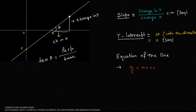We call the slope of any line m. The y-intercept is where the line intersects the y-axis at point p; op is the y-intercept with direction, where o is the origin. If the intersection point is below the origin it is negative, above is positive — we call it c. The equation of the straight line is y = mx + c, where m is the slope and c is the y-intercept.